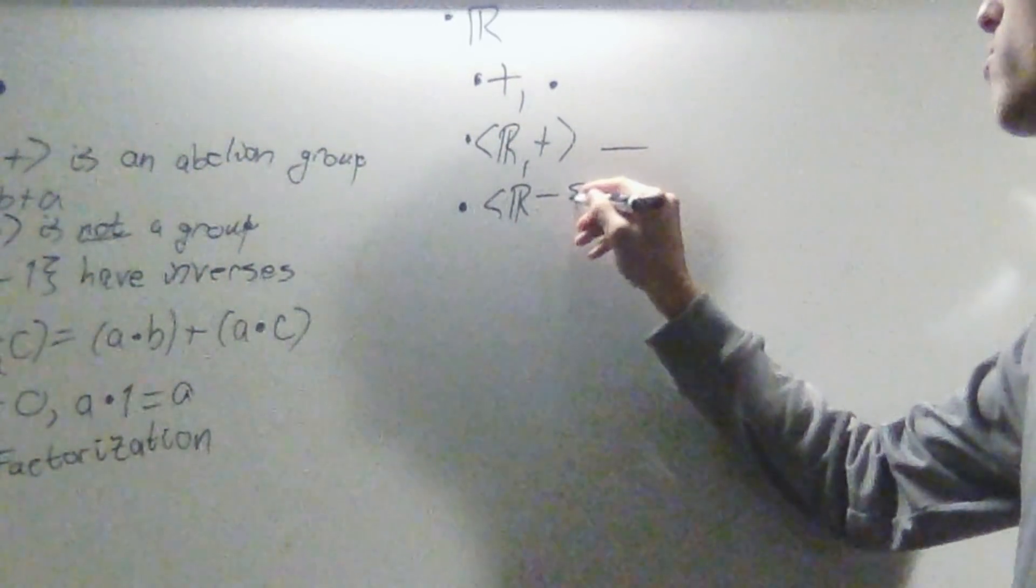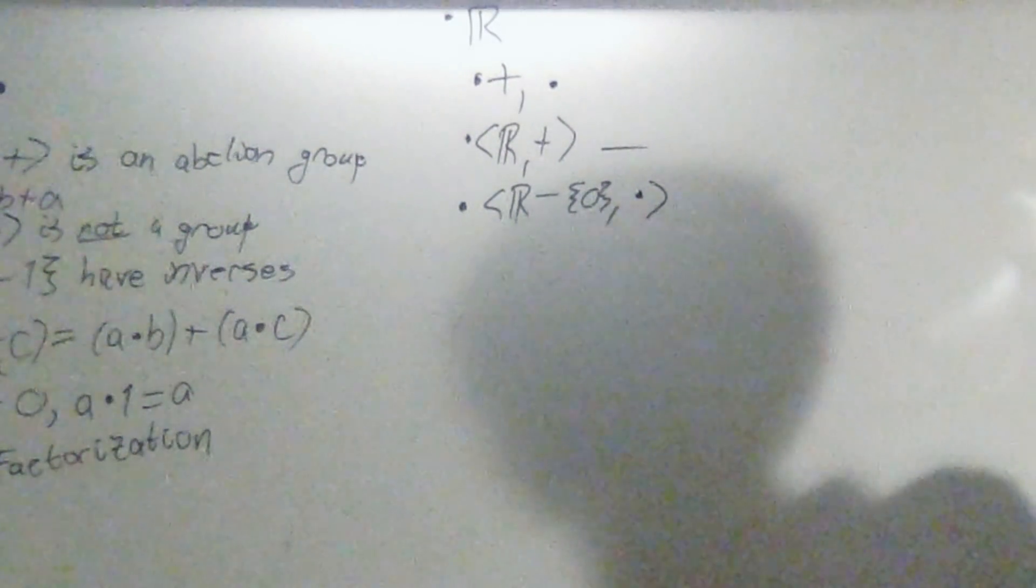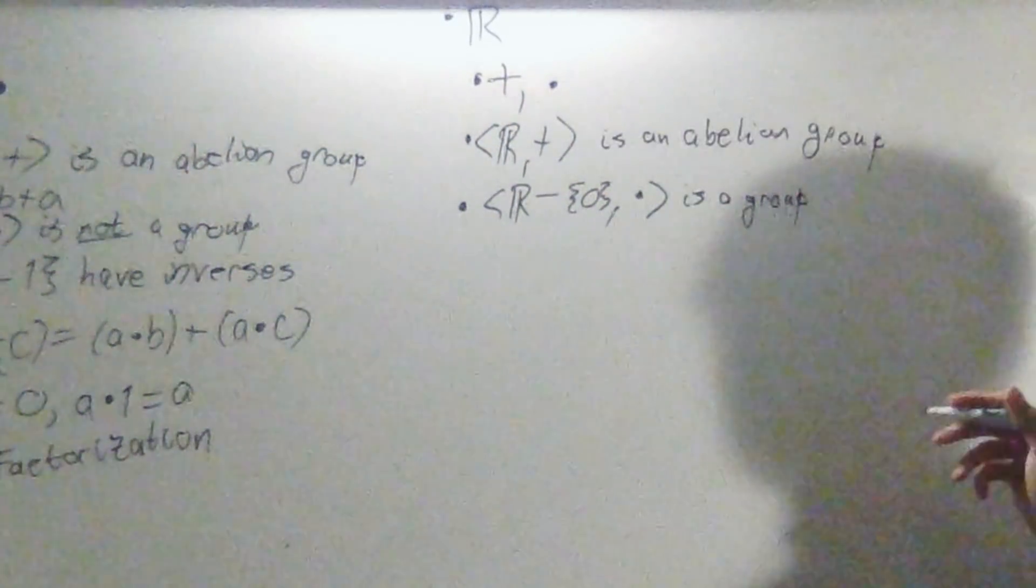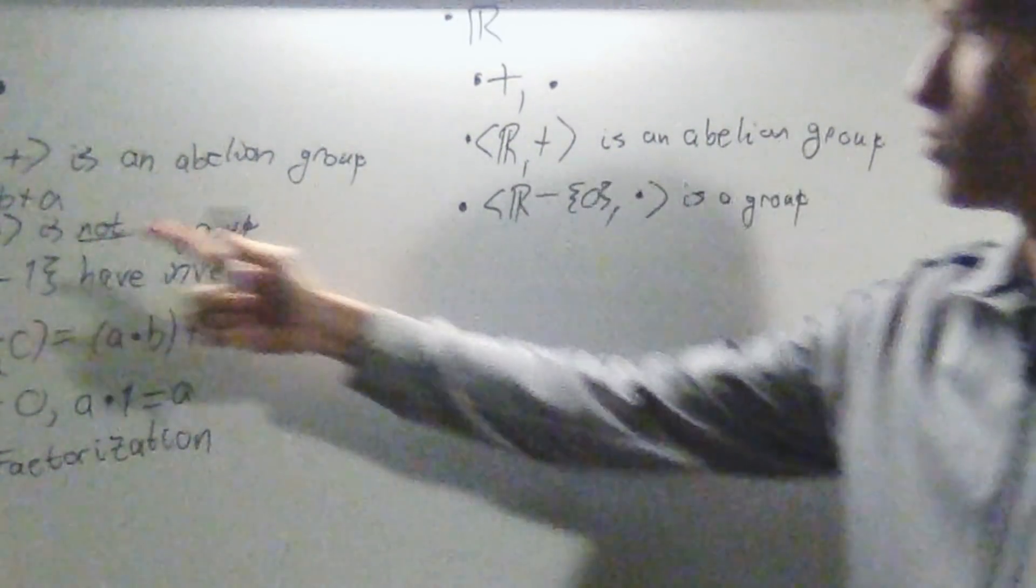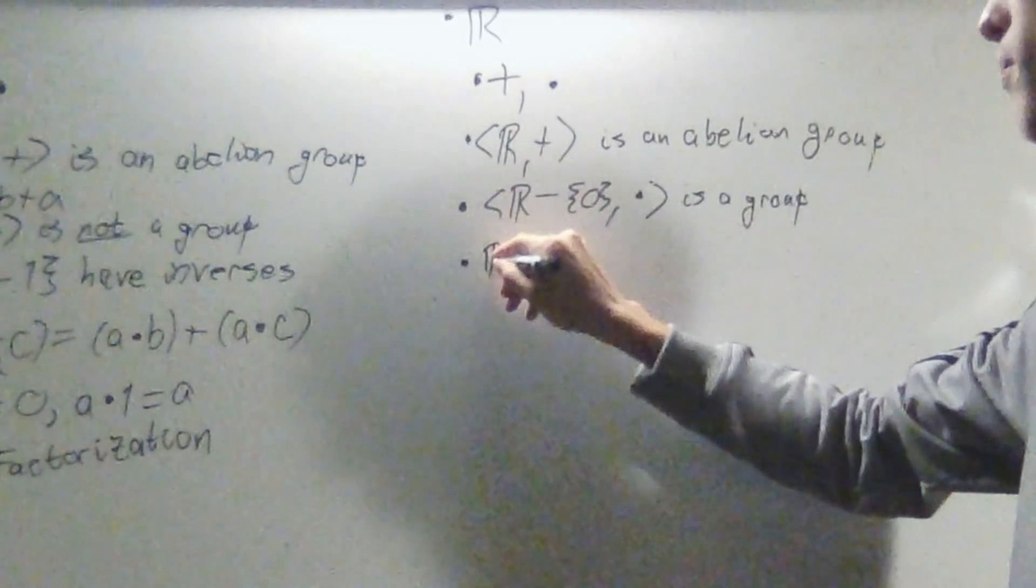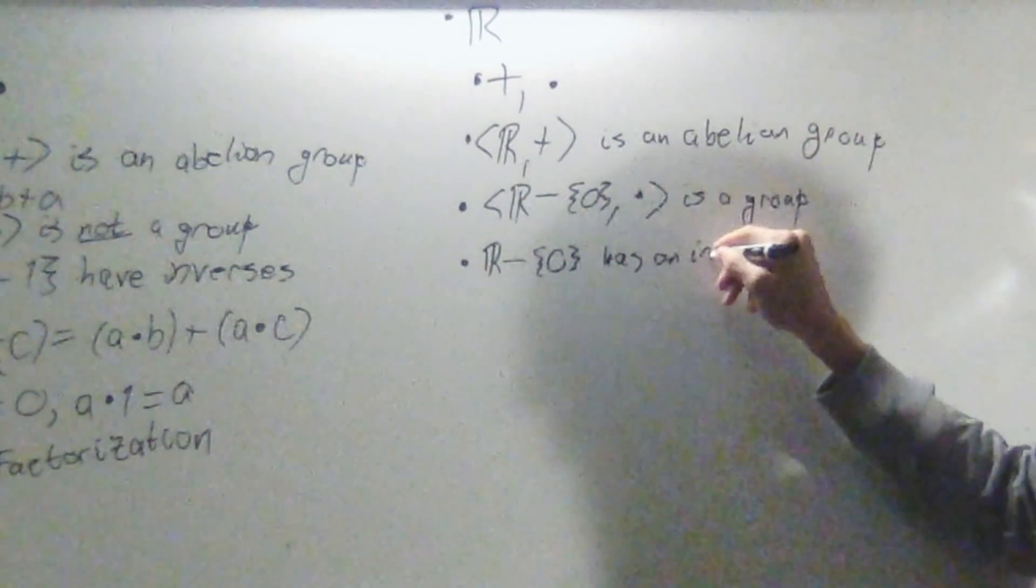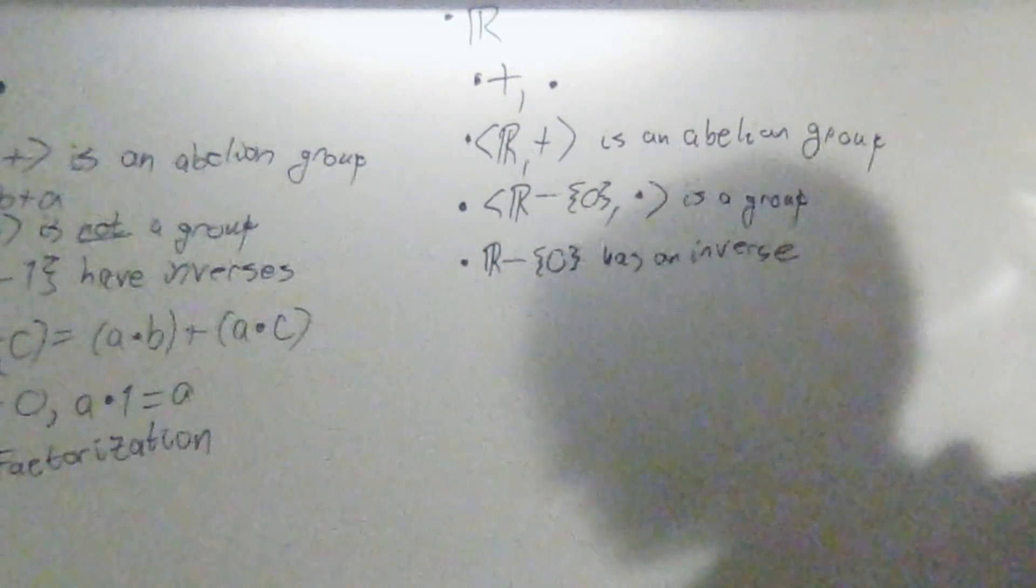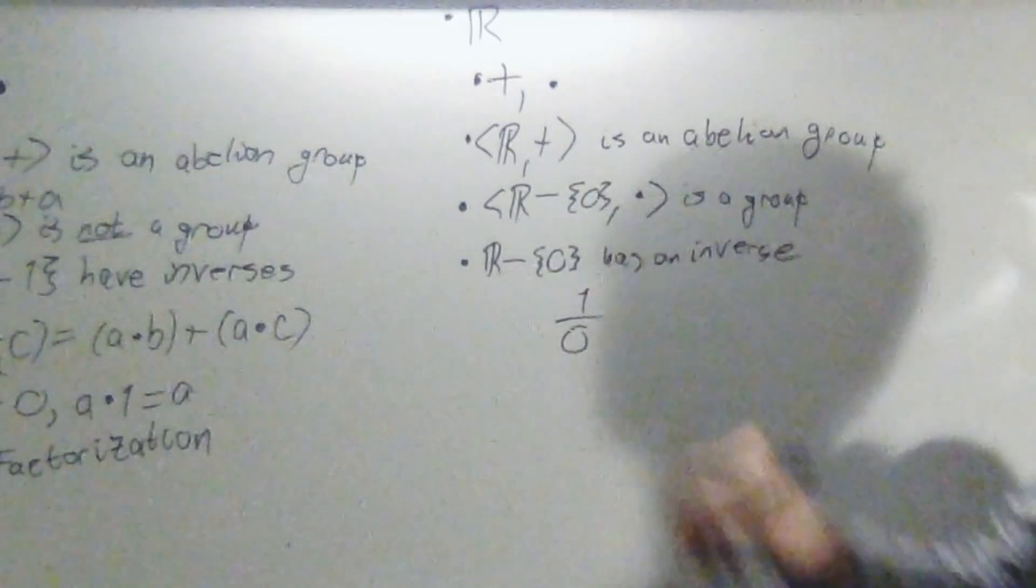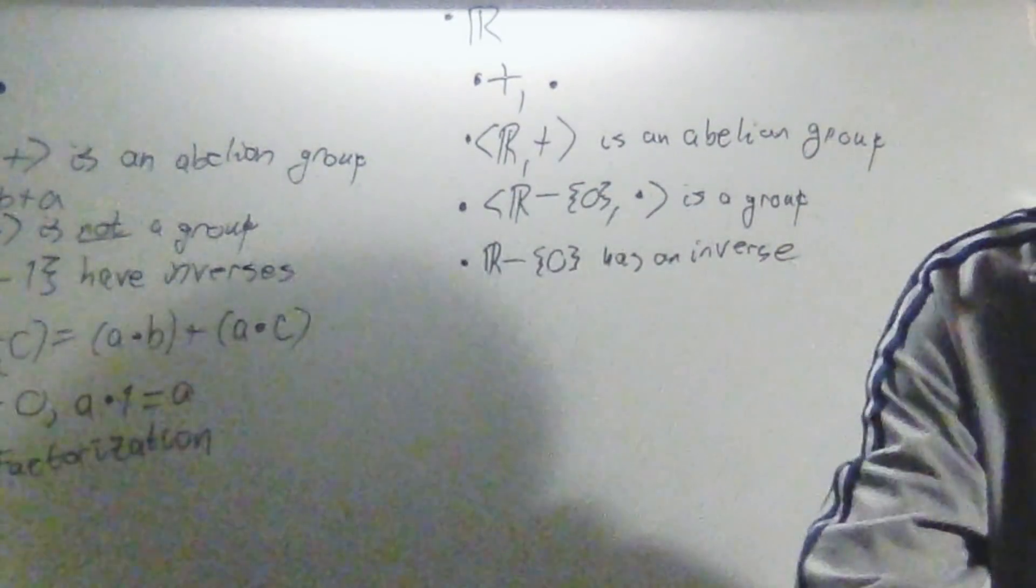I'm going to remove 0 from R and do it under multiplication. So R minus 0 under multiplication is a group, and it's actually an abelian group. So we have this property, which Z does not, and R minus 0, so everything except for 0, has an inverse. So it's very different from the integers, actually, if you look at multiplication. The reason why 0 doesn't have an inverse is because 1 over 0 doesn't exist.